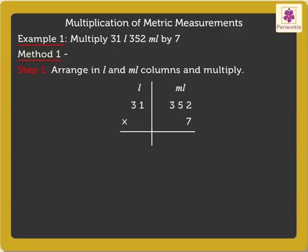Thus, on multiplying 31 litres 352 millilitres by 7, we get 217 litres 2464 millilitres.